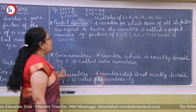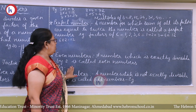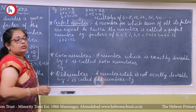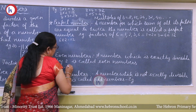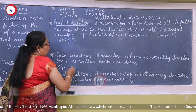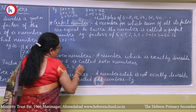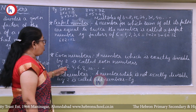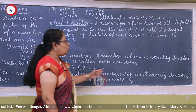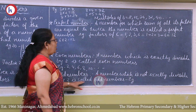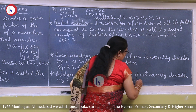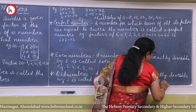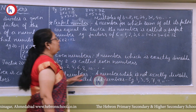Next we come to even numbers. A number which is exactly divisible by 2 is called an even number. Any number whose unit place digit is divisible by 2 — that is, unit digits 0, 2, 4, 6, 8 — are called even numbers. Examples: 2, 4, 6, 8, 10, and so on. Same way, odd numbers: a number which is not divisible by 2 is called an odd number. Examples: 1, 3, 5, 7, 9, 11, and so on.